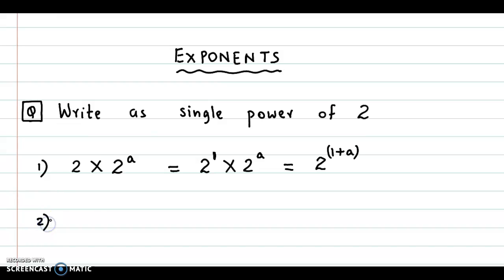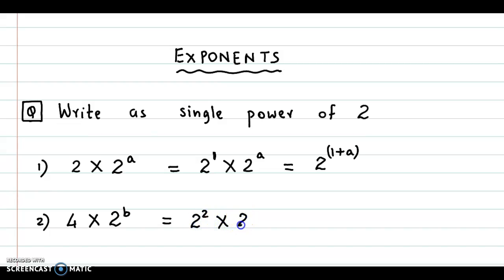Let's see the next one: 4 into 2 raised to b. Now, 4 could be expressed as 2 squared, giving 2 squared into 2 raised to b. We could combine these as 2 raised to 2 plus b.